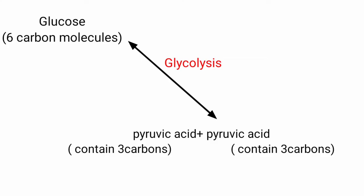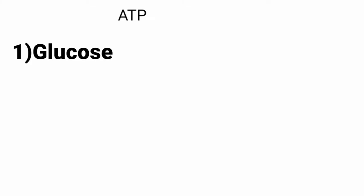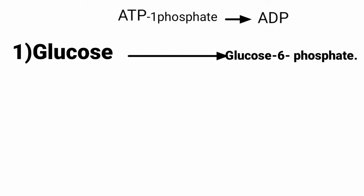In the first step of glycolysis, a molecule of glucose reacts with ATP (adenosine triphosphate). A phosphate group from ATP is attached to the 6-carbon of glucose, forming glucose-6-phosphate. The enzyme hexokinase catalyzes this reaction. Hexose refers to a 6-carbon-containing molecule.